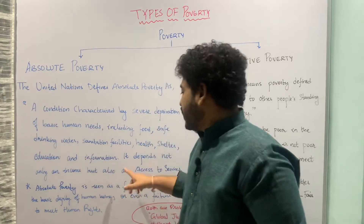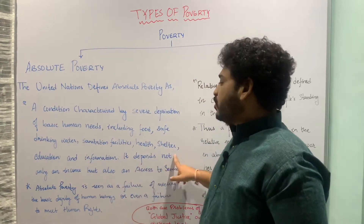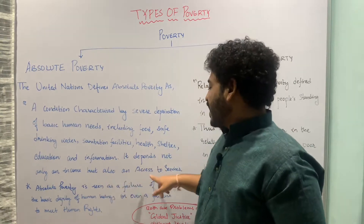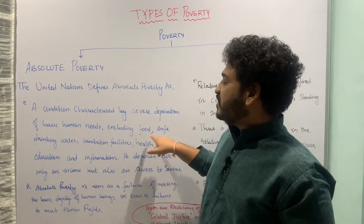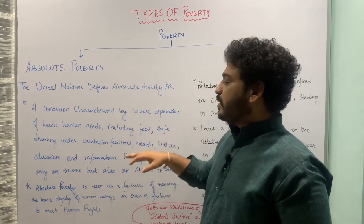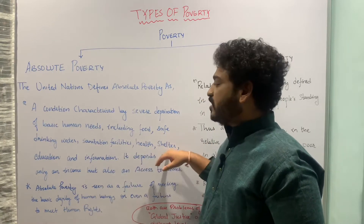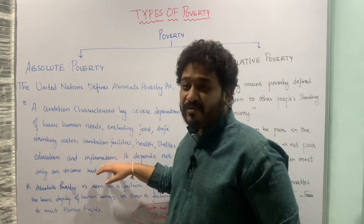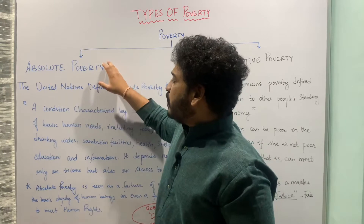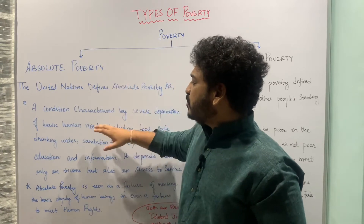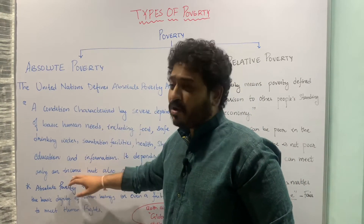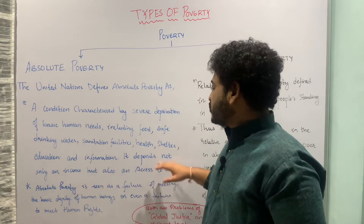Furthermore, absolute poverty depends not only on income but also on access to different services such as food, safe drinking water, sanitation, health, shelter, education, information, and so on. So absolute poverty is not only deprivation in terms of income but also in terms of access to certain services.